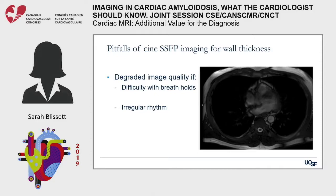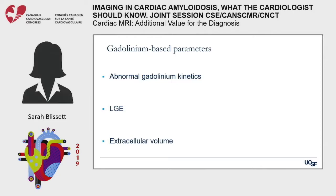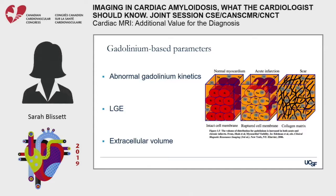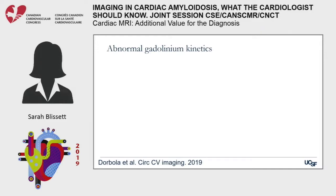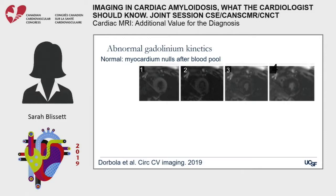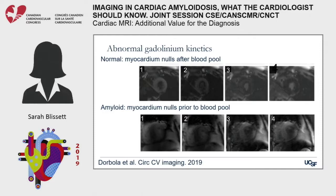Gadolinium is an extracellular-based compound. In normal myocardium we would not expect gadolinium present in tissues 10 minutes after administration. But in amyloid, there is an expanded extracellular matrix where gadolinium can accumulate, producing hyperenhancement on late gadolinium imaging. On T1 scout images, normally the myocardium nulls after the blood pool, but in amyloid patients it is reversed — the myocardium nulls prior to the blood pool, or you may have difficulty nulling the myocardium at all.